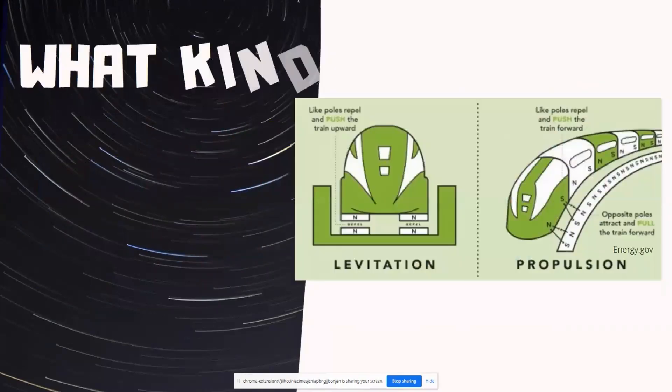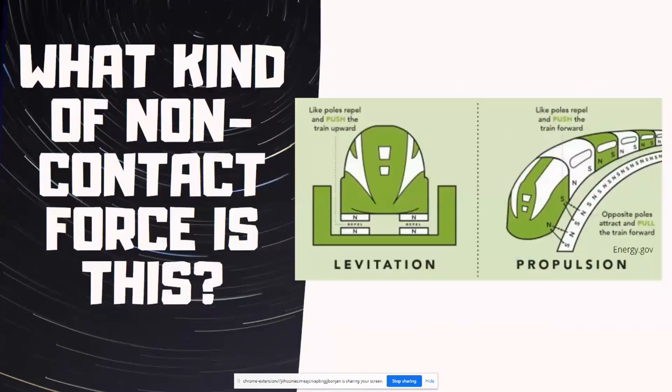And then lastly, we're going to look at this. What kind of non-contact force is this? So here we can see that we have a train and we have magnets stuck to the bottom of the train. We have north polar magnets on the bottom of the train and north on the track.